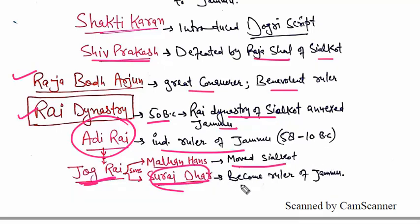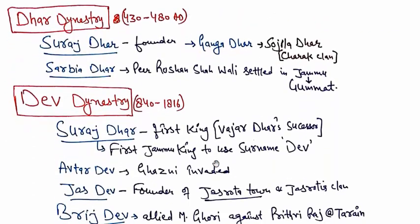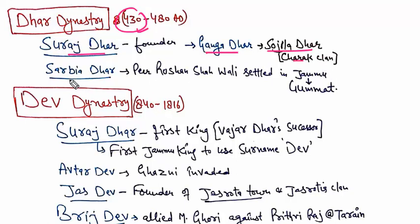Sordidhar became the ruler of Jammu and started a new dynasty called the Dhar dynasty. The Dhar dynasty was established in 430 AD by Sordidhar. Then it comes to Gangadhar, and then Sojladhar. Sojladhar continued the Dhar dynasty.